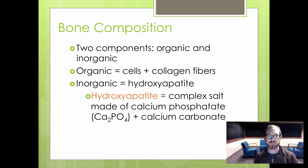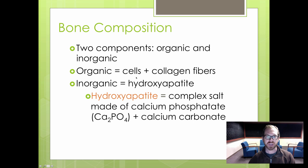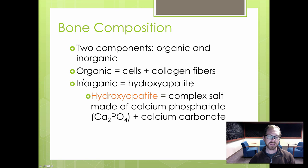The composition of bones is made up of two components. One is organic — all the cells that make up your bones, as well as structural proteins and fibers, in this case collagen fibers. The other is an inorganic component called hydroxyapatite, a complex salt made up mostly of calcium phosphate and calcium carbonate.